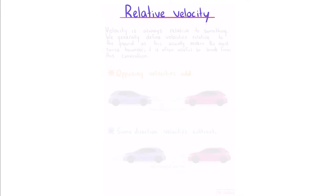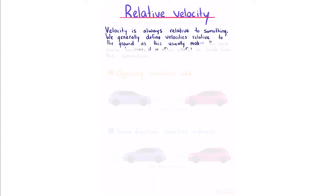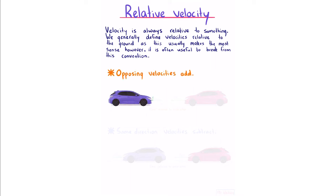Relative velocity. Velocity is always relative to something; we generally define velocities relative to the ground. When dealing with relative velocities, there are two rules. First, opposing velocities add: if two vehicles travel towards each other, one at 5 and one at 7 meters per second relative to the ground, they are moving at 12 meters per second relative to each other.